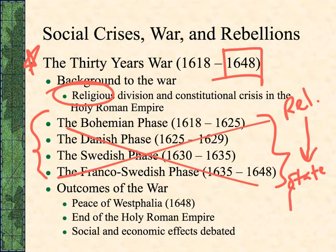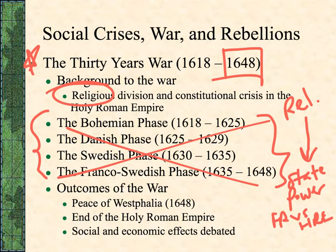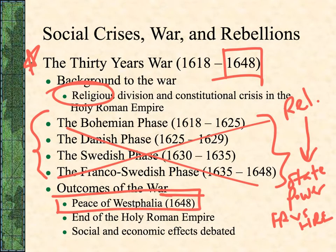By the end, this is a war about state power — you have Protestants siding with Catholics to fight against Catholics who also side with Protestants. It's all about state power, and it really ends up being the French versus the Holy Roman Empire and the Habsburgs. The Peace of Westphalia — you need to know this date — is 1648.